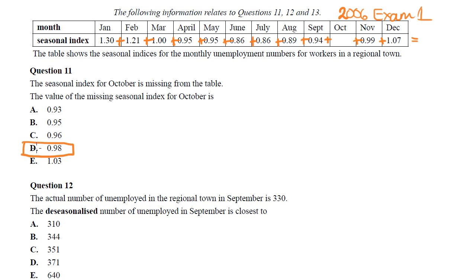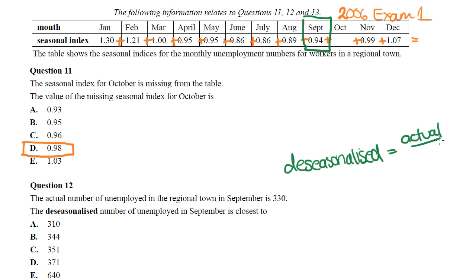The next question: the actual number of unemployed in September is 330. Using the formula, de-seasonalized equals actual divided by the seasonal index. The seasonal index for September is 0.94. So 330 divided by 0.94 gives approximately 351 — answer C.